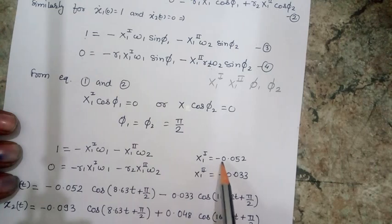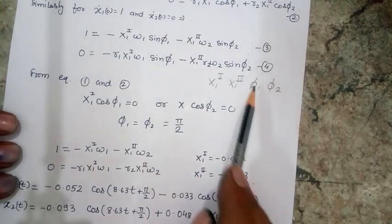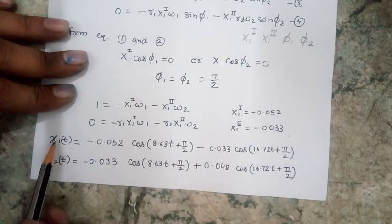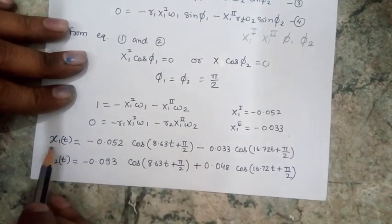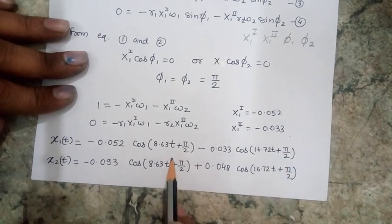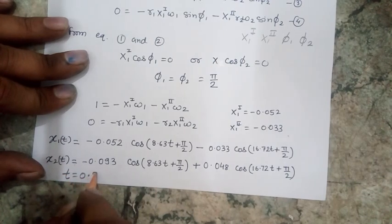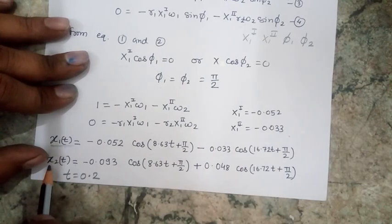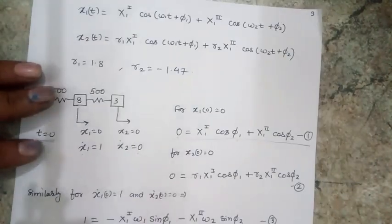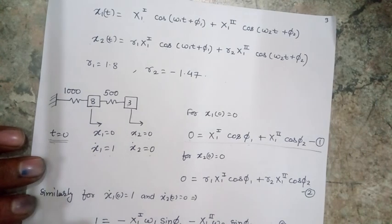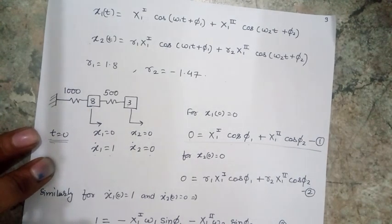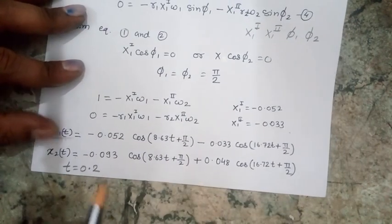Substituting φ1 = φ2 = π/2 into equations 3 and 4 and solving, I get X1(first mode) = −0.052 and X1(second mode) = −0.033. Putting these values along with the phase values into the two governing equations gives the full response expressions for the two masses. For any time instant, for example t = 0.2 s, I can substitute into these equations to get the magnitudes of x1 and x2, which tell me the positions of both masses at that time.